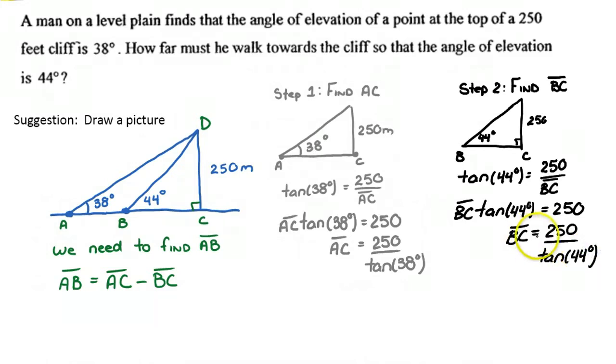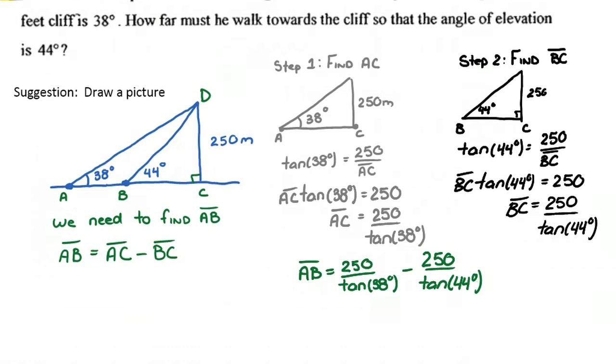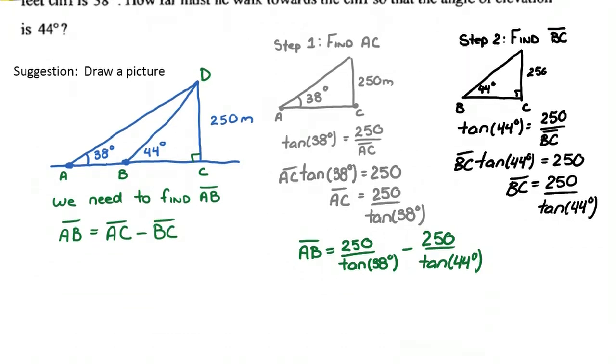Again, I could find the approximate value here, but I'm not going to. I'm going to leave it like this, because what I'll do with both of these is I'll sub them right into this equation we found earlier. So we're going to write now, AB is equal to AC minus BC, which equals 250 over tan 38 degrees minus 250 over tan 44 degrees.